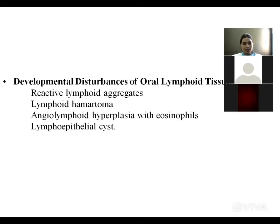Developmental disturbances of oral lymphoid tissue include reactive lymphoid aggregate, lymphoid hematoma, angiolymphoid hyperplasia with eosinophil, and lymphoepithelial cyst.